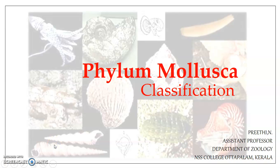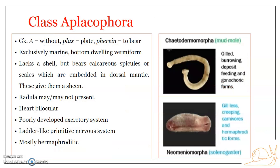Hello everyone, welcome to the second session on the classification of Phylum Mollusca. We have already seen that Phylum Mollusca is classified into seven classes: Aplacophora, Polyplacophora, Monoplacophora, Gastropoda, Pelecypoda, Scaphopoda, and Cephalopoda. In this presentation, we will see the details on Aplacophora and one example to represent the particular group.